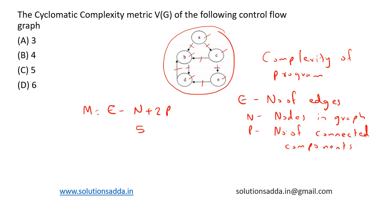...5, 6, 7. So 7 minus 5 plus the number of connected components, which is only one since the whole graph is connected, times 2, equals 4. The cyclomatic complexity of this control flow graph is 4.